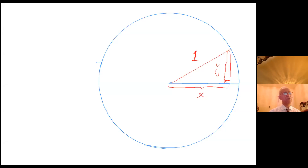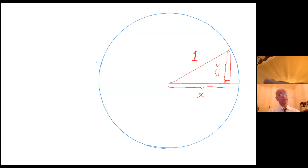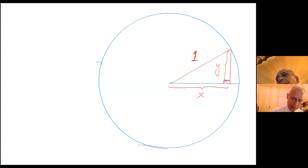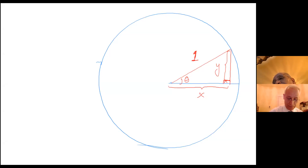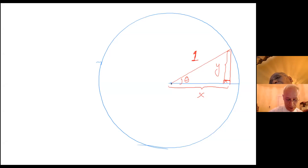Let's look at this unit circle. The radius is one. Look at this right triangle in here, and if I put my theta in here, the cosine is the horizontal distance from this angle — so this is cosine theta.